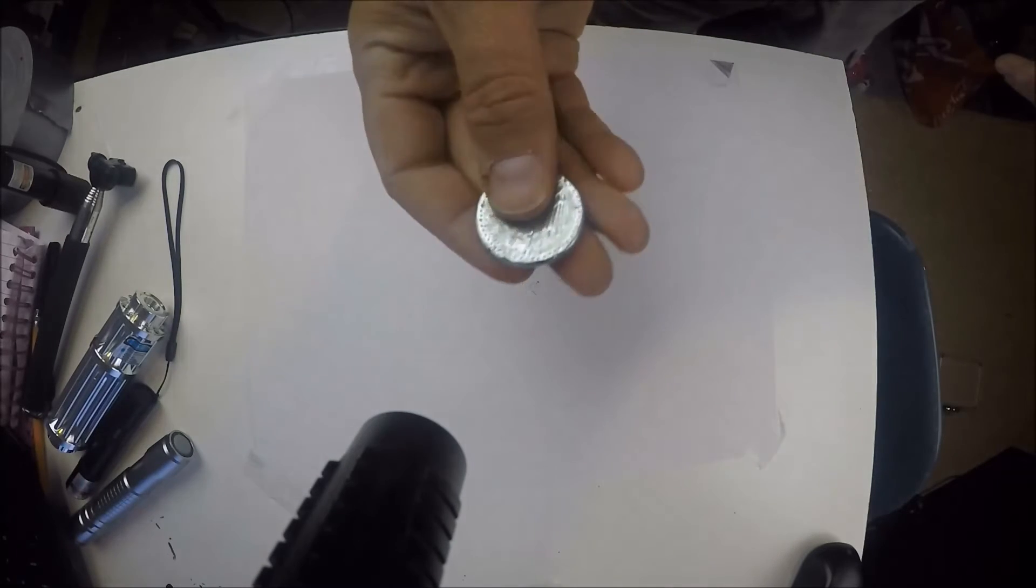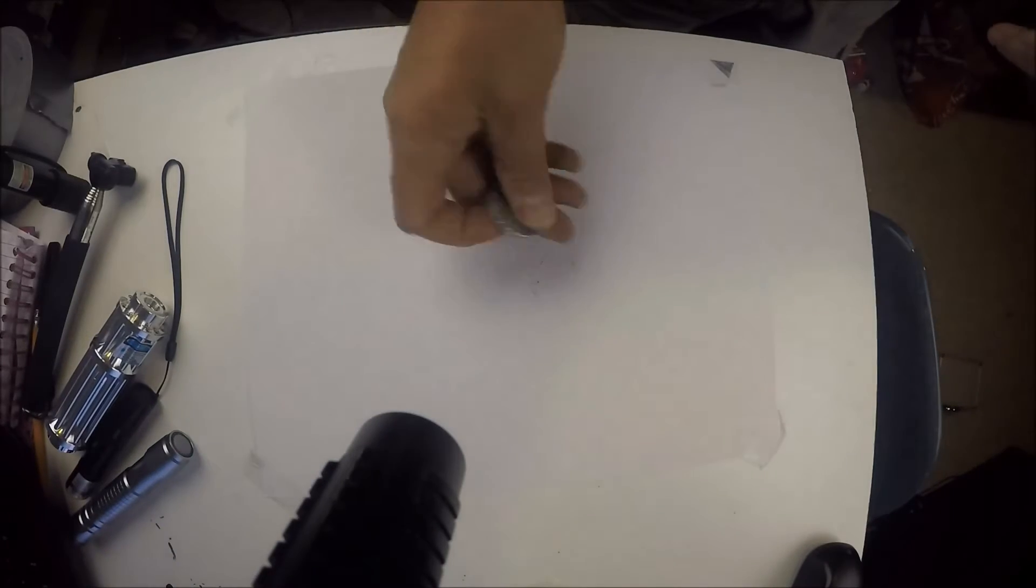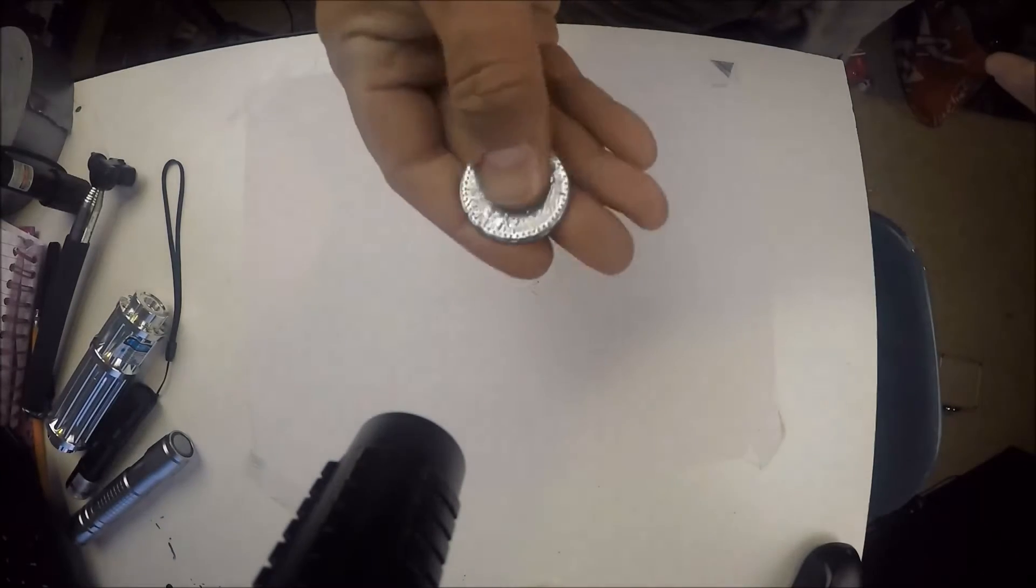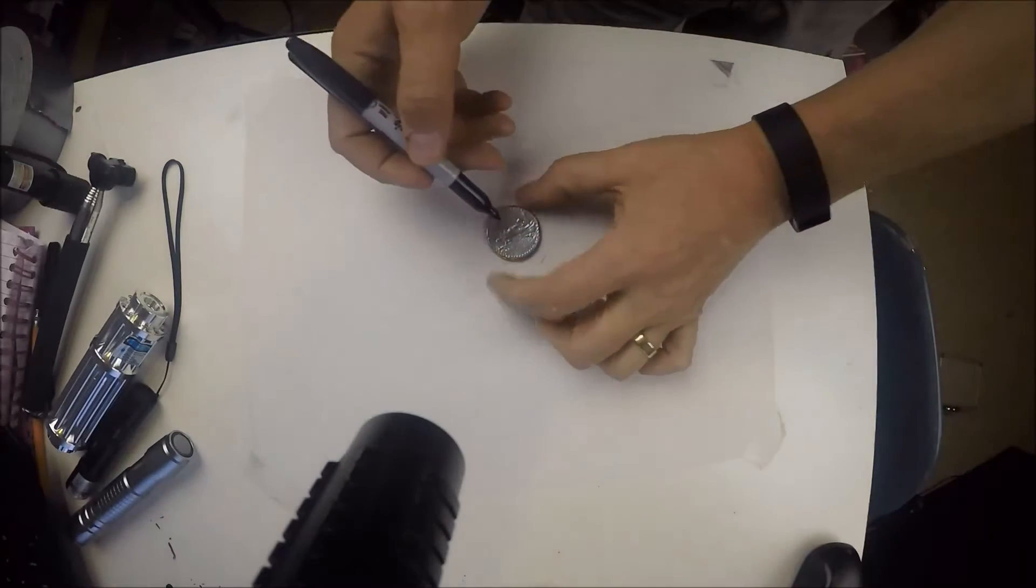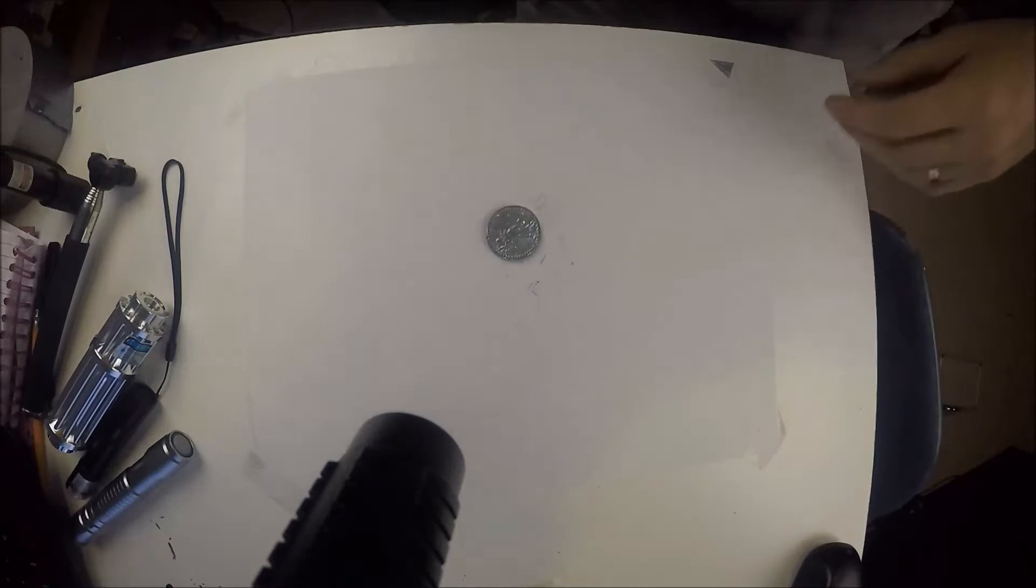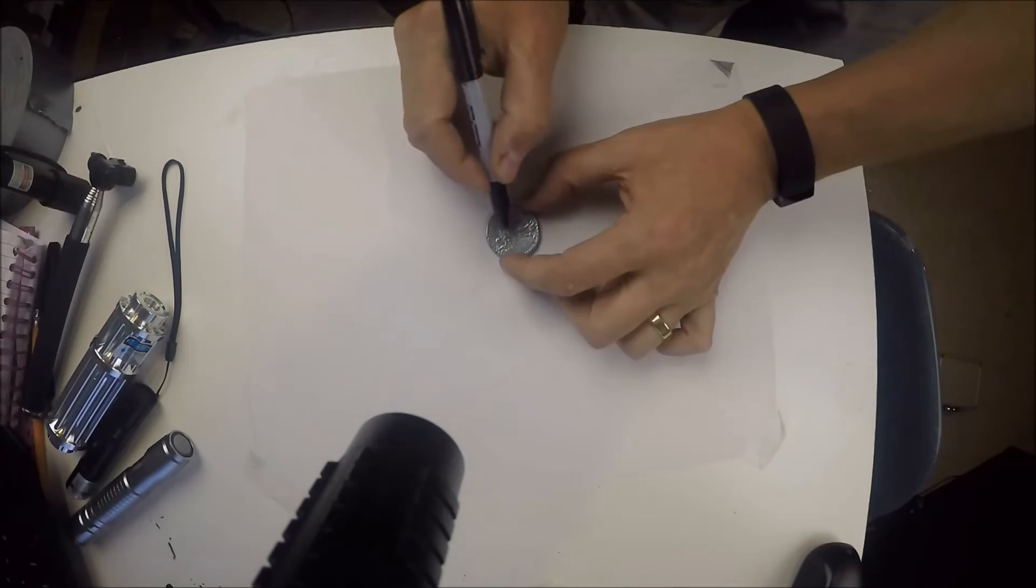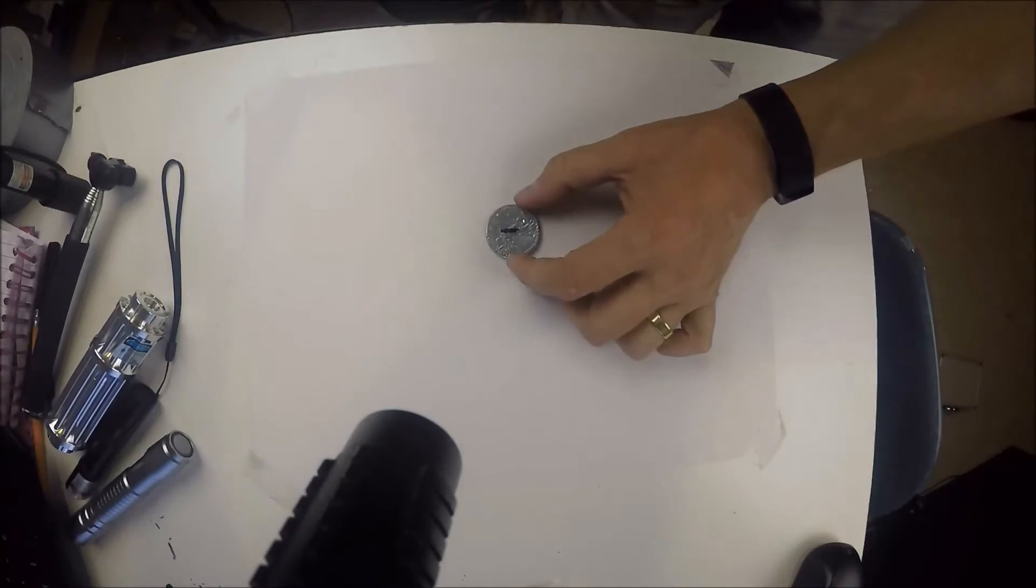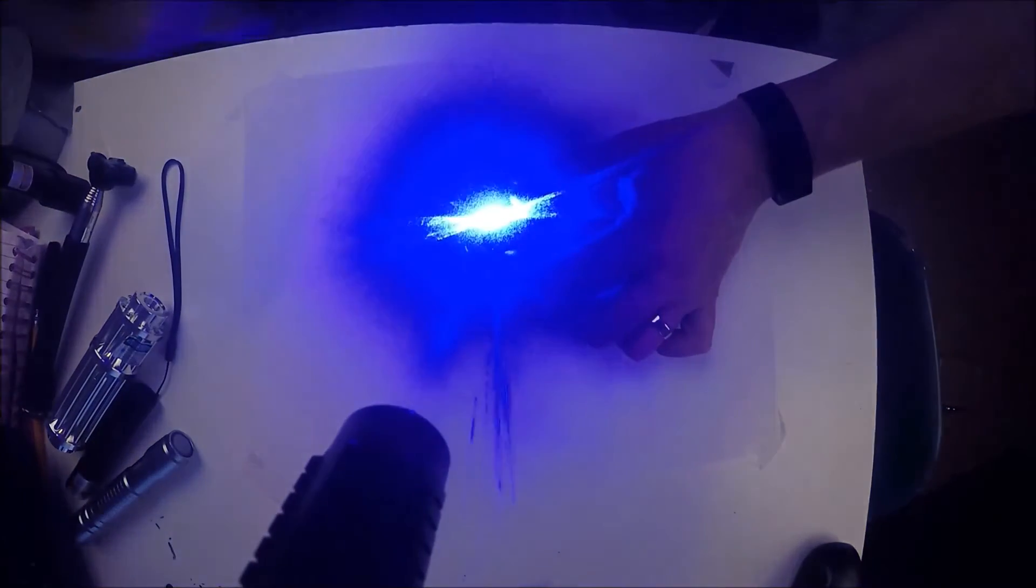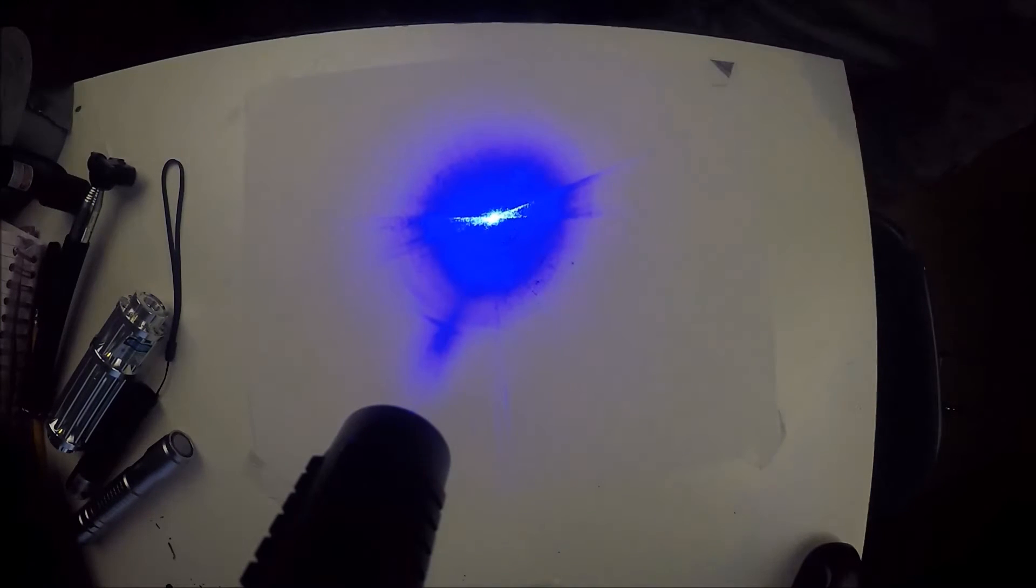How's it going? Today we're gonna try to burn this coin with a laser. So what I'm gonna do to help the laser out, I'm gonna put a little black spot on it so it'll help heat it up. We'll put a spot right here. And here comes the laser, and we're gonna give that a minute, see what it does.